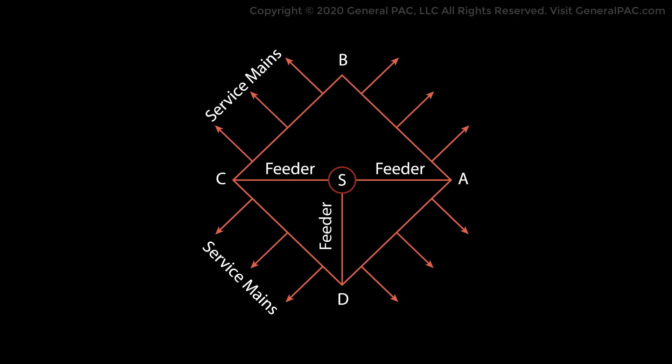A distributor is a conductor from which tappings are taken for the supply to the consumers. The current throughout a distributor is not the same because tappings are taken at different points along its length. The branch conductor is also called taps, laterals, or branch lines. A service main is a conductor that connects a distributor to the consumer terminals.